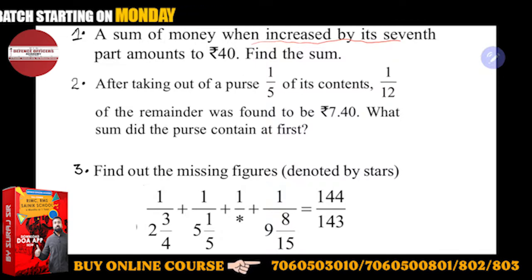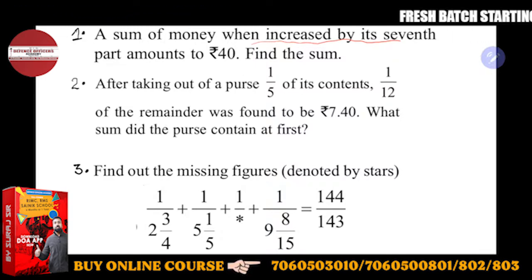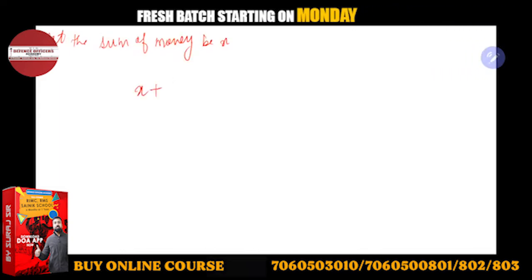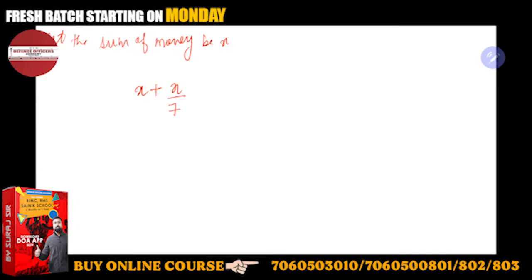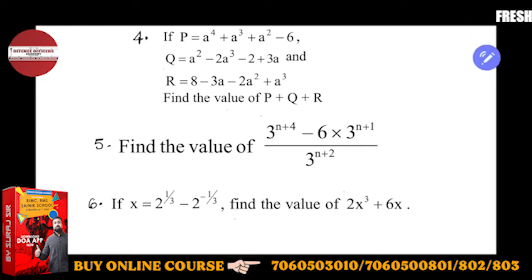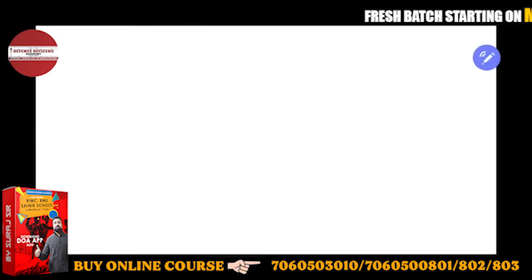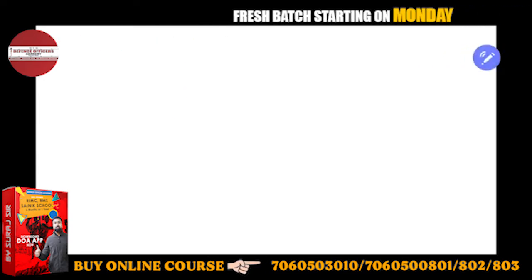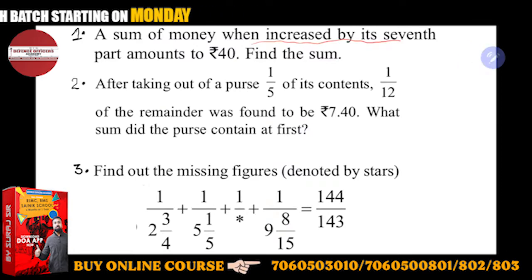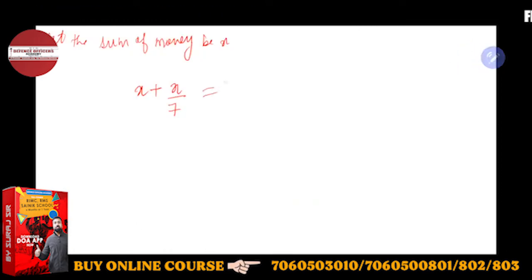When you increase it by one-seventh, by its seventh part, the amount becomes rupees 40. So sum of money is X, when you increase it by its seventh part, it will give you 40. That will be equal to 40.